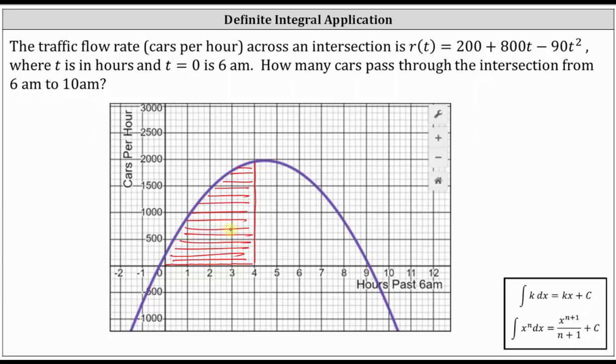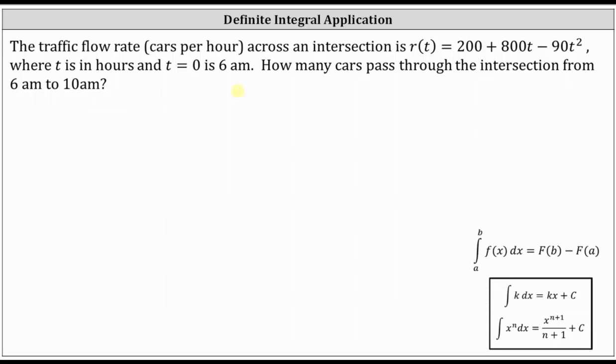And now let's set up and evaluate the definite integral. The number of cars passing through the intersection from 6 a.m. to 10 a.m. is equal to the definite integral from zero to four of the flow rate function, which is 200 + 800t - 90t² with respect to t. And now we find the antiderivative with respect to t, which is 200t + 800 times t² divided by two minus 90 times t³ divided by three. And the limits of integration are from zero to four.